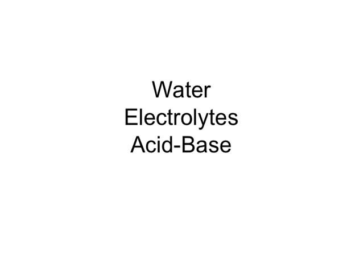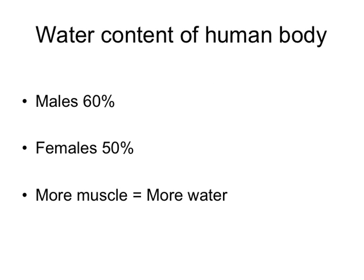Let's start with water. The water content of the body is approximately 60% for males and 50% for females, and that's an estimation. You can find different numbers in different texts — it depends on the makeup of the individual. Because muscle has more water than fat tissue, individuals with a greater muscle mass will have greater water content. And because males generally have more muscle mass than females, males generally have a greater percentage of water.